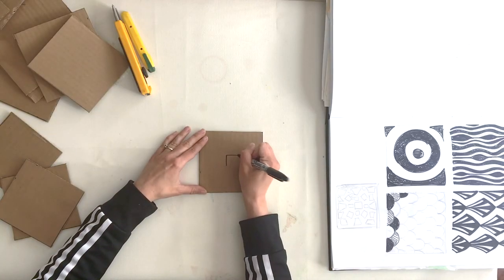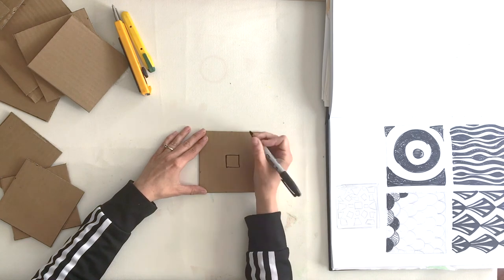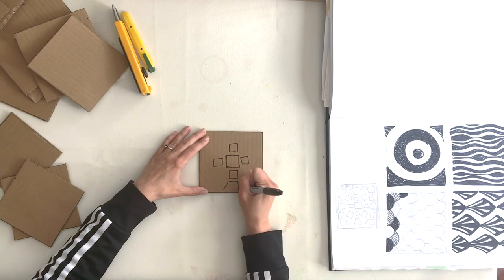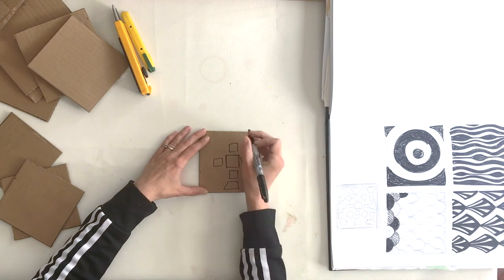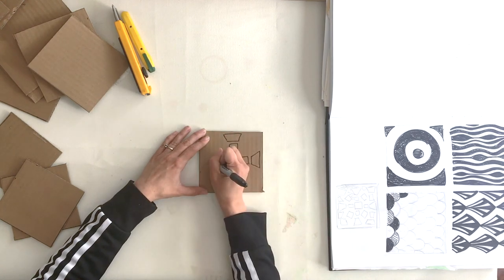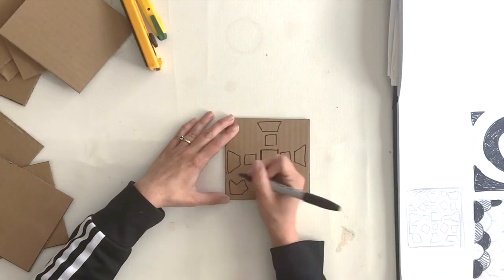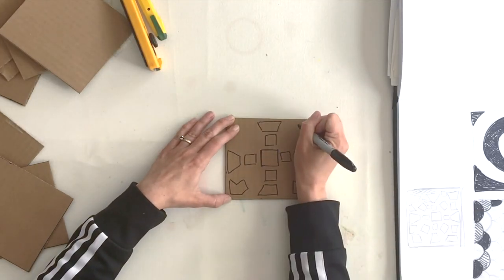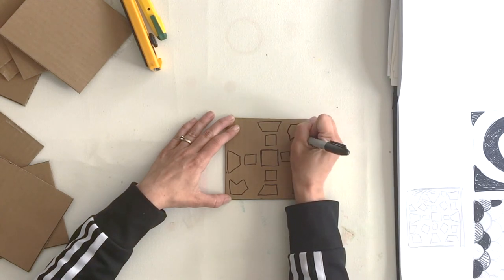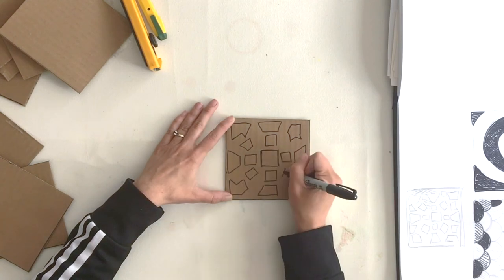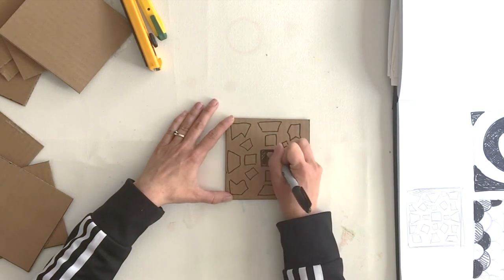Here I am drawing my design plans onto my cardboard using a Sharpie. If you like, you can shade your design to indicate positive or negative space.